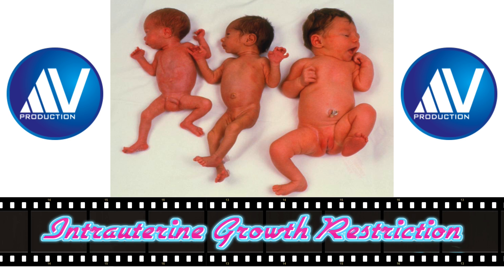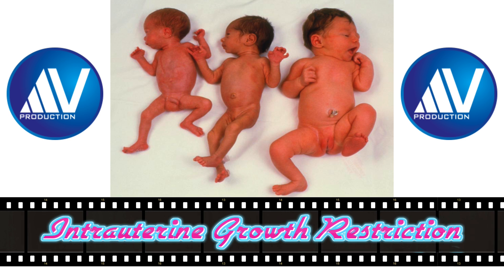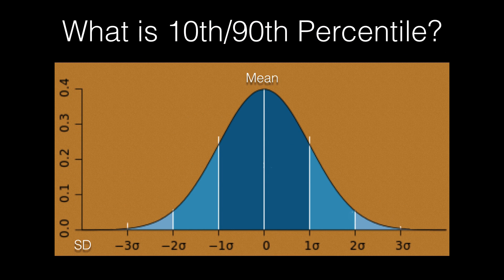Before I start the topic, I am going to discuss a few basics that are essential to understand it. First, I will explain what is a percentile. Here is a distribution curve for estimated fetal weight of normal babies for a particular gestational age, such as 28 weeks. From this, the mean and standard deviation are calculated. Two standard deviations less than the mean is called the 10th percentile, whereas two standard deviations greater than the mean is called the 90th percentile.